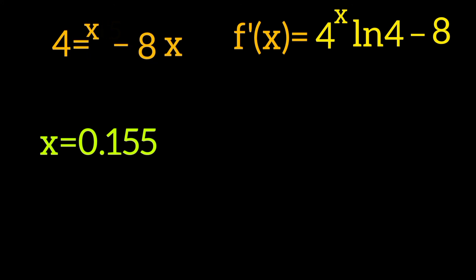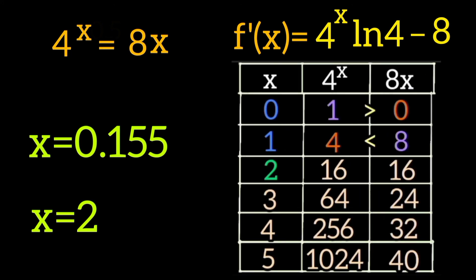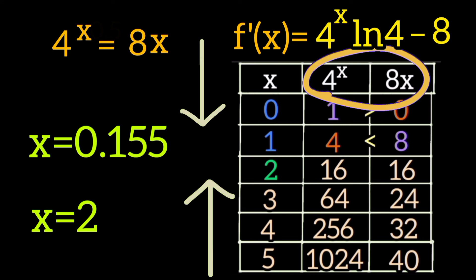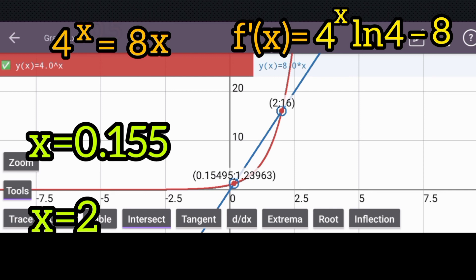Now for the problem we are solving, the two solutions we found are x equals 0.155 and x equals 2. These are our only solutions since there is no other solution when x is greater than 2. And also, when x is between 1 and 2, these two functions were just adjusting themselves to meet at x equals 2. Here is the graph of 4^x and 8x, just for you to see how it looks like on a decent display.